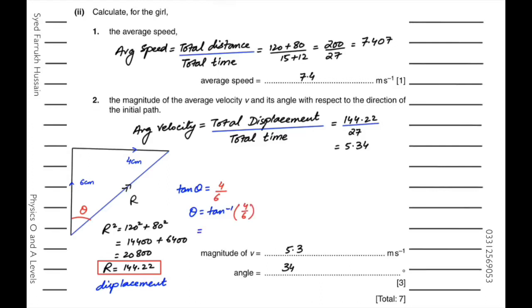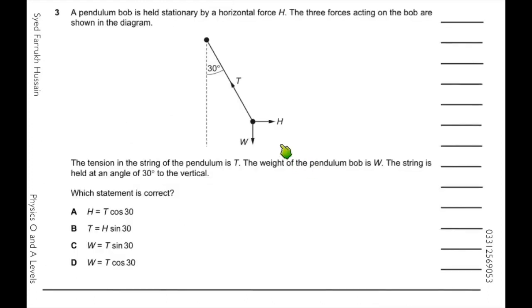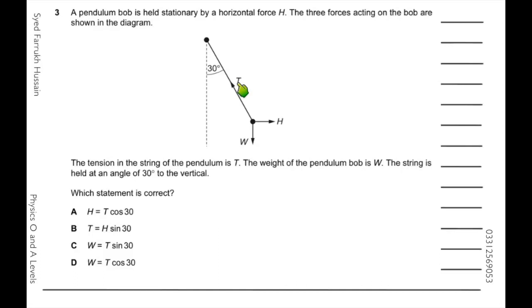A pendulum bob is held stationary by a horizontal force. There are three forces: tension T, horizontal force H, and weight W. Since H and W are on the x and y axes respectively, you don't need to resolve them. However, tension T has components on both horizontal and vertical axes, so you resolve T.